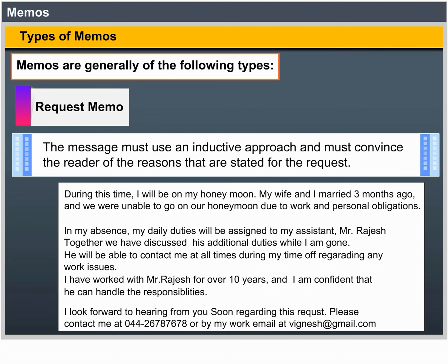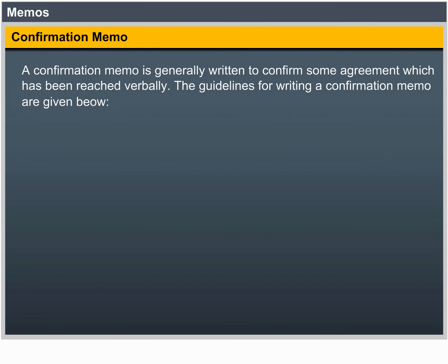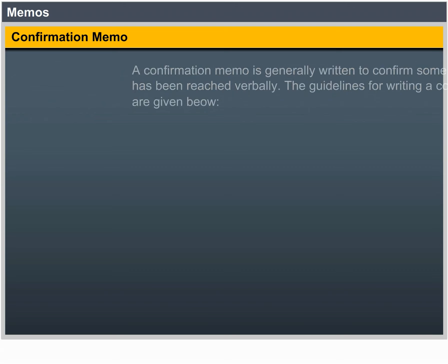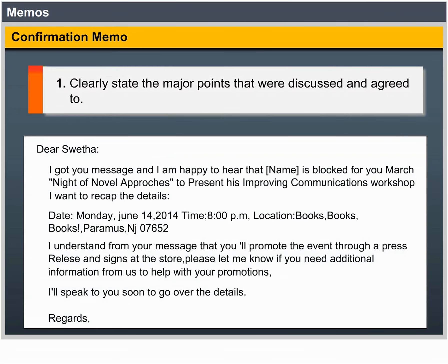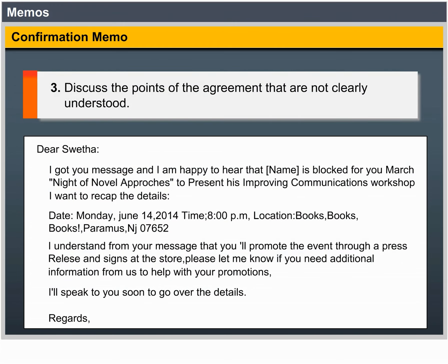Confirmation Memo: A confirmation memo is generally written to confirm some agreement that was reached verbally. The guidelines for writing a confirmation memo are: 1. Clearly state the major points that were discussed and agreed to. 2. Enumerate the major points for easy reference in the future. 3. Discuss the points of the agreement that are not clearly understood.